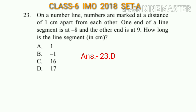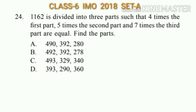Question number 24: 1162 is divided into three parts such that four times the first part, five times the second part, and seven times the third part are equal. Find the parts. If you can solve the question, please pause the video, solve it, and write your answer in the comment section. It is given that four times the first part equals five times the second part equals seven times the third part. Suppose this equals x, so the first part will be x by 4, the second part will be x by 5, and the third part will be x by 7.